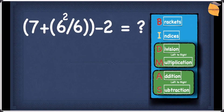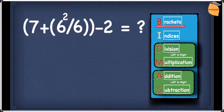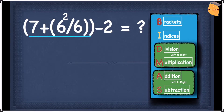Now let's have a look at this example. In this example let's first see if you have any brackets — we do have brackets right here. So we rewrite the whole question except for the bracket, which we'll work out. You may notice that we have two brackets: we have an inner bracket and we have an outer bracket.